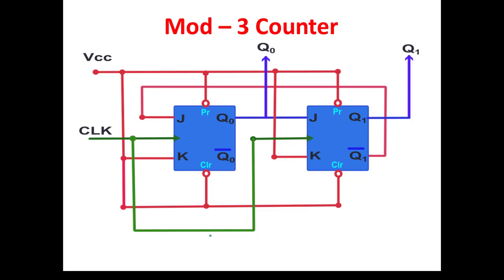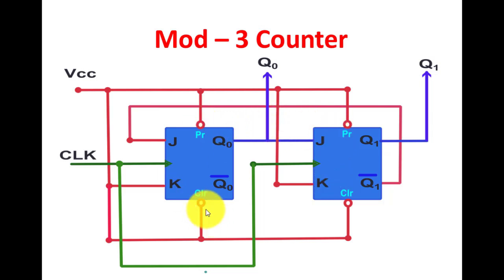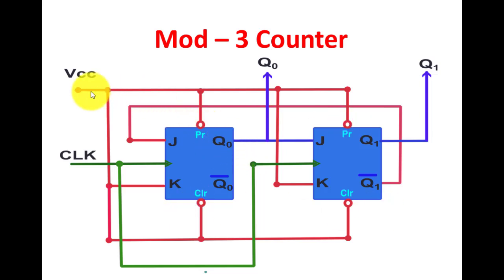This is the logic diagram we require to construct a mod-3 counter. As you can see, there are two JK flip-flops. VCC is connected to both the K inputs. The preset and clear pins are active low, so we connect them directly to VCC for proper functioning. The clock is simultaneously applied to both flip-flops.